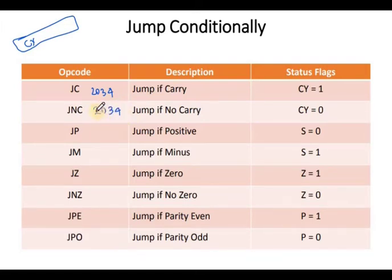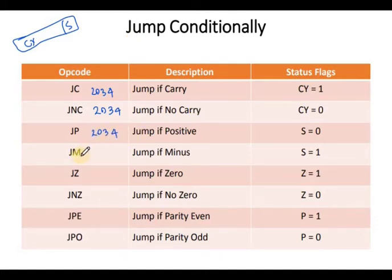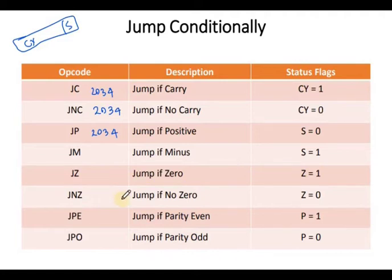JMP 2034 on various conditions: JP is JMP if positive, related to the sign flag. JZ means zero flag is set to 1. JNZ means zero flag is not set. JPE means parity is even; JPO means parity is odd. These are the different conditions for conditional branching.